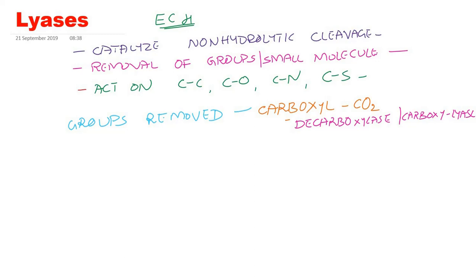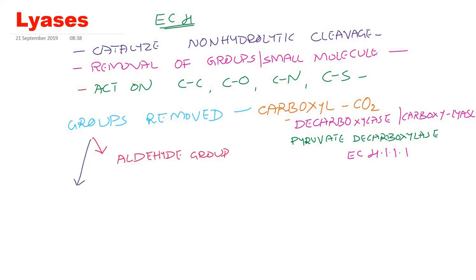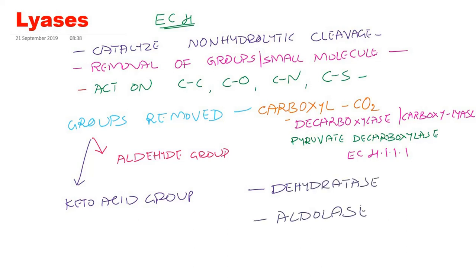One example is pyruvate decarboxylase, which is EC 4.1.1.1, the first enzyme in this enzyme series. Lyases can remove not only a carboxyl group, but also an aldehyde group or a keto acid group. The bigger substrate is converted to two smaller products by removing a carboxyl, aldehyde, keto, or many other groups. Depending on the bonds broken or groups removed, they are subclassified as decarboxylase, dehydratase, or aldolase.